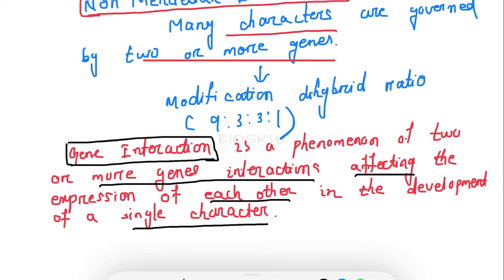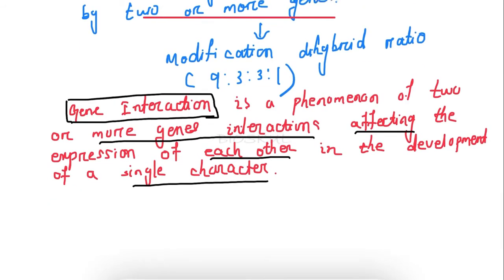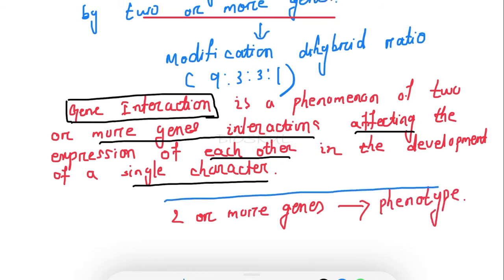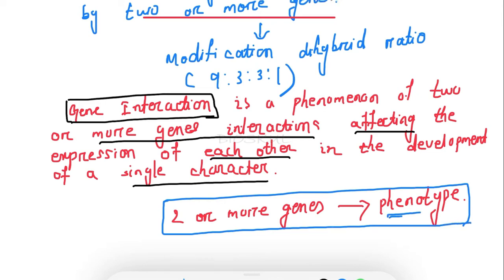In simple words, two or more genes lead to a single phenotype. In gene interaction, the two or more genes interact with each other and affect their expression in such a way that it leads to the development of a single phenotype in an organism. In gene interaction, you will find a deviation in the dihybrid cross ratio.